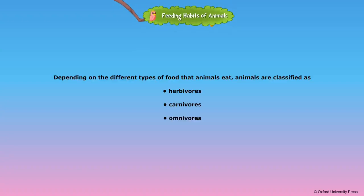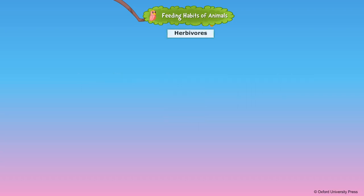Feeding habits of animals: depending on the different types of food that animals eat, animals are classified as herbivores, carnivores, and omnivores.